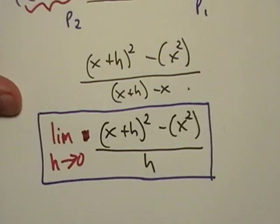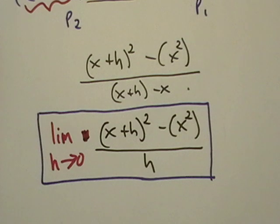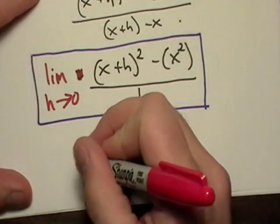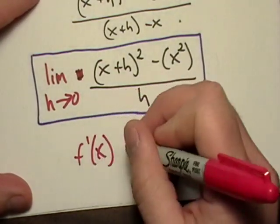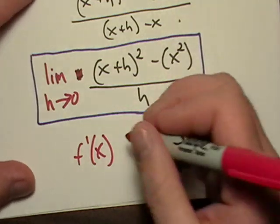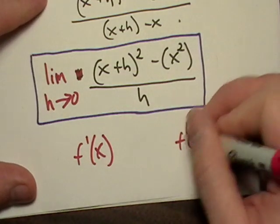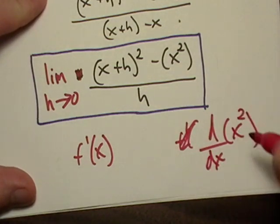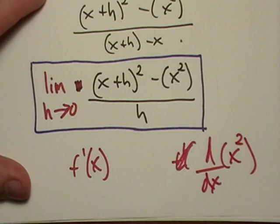It looks like we just kind of algebraically arrived at our derivative equation. Our original goal was to find f prime of x. We wanted d/dx of x squared, and this is probably usually the first one you're going to find.